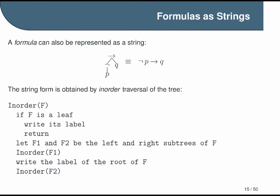For this to work, we also have to handle the case where the root is the not symbol and there's only one child. We could handle this case separately. But to keep things tidy, it's convenient to implement formulas that have not as the principal operator by treating the left subtree as being an empty tree that we just ignore. So in this case, in order F1 is just skipped, and we move on to writing the label of the root and then proceed with in order F2 on the right side.